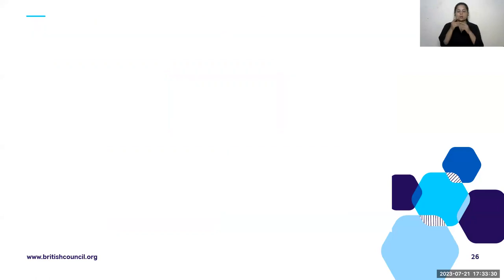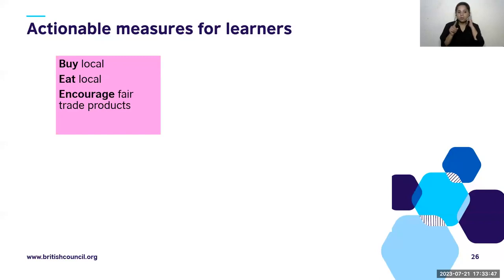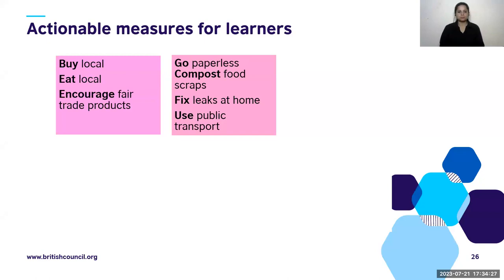Now let's look at actionable measures for learners. The first is to buy local, eat local, and encourage fair trade products — crucial given the huge chains of restaurants mushrooming up around us. Compost food scraps, fix leaks at home, and use public transport to save on fuel wastage. Going paperless is also very current — we all do digital transactions and try to save on printouts after COVID.